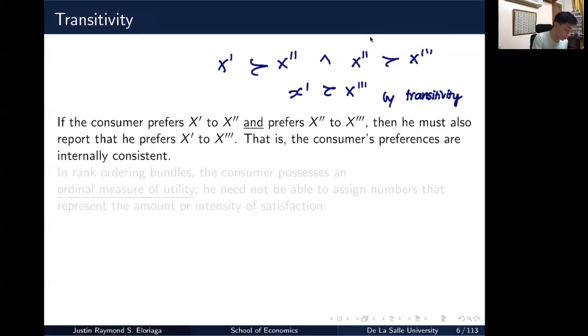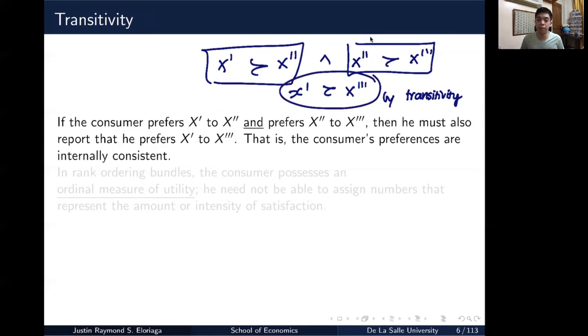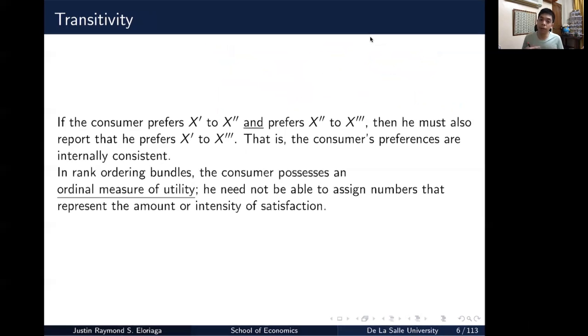In essence, the consumer's preferences are internally consistent. So when I ask you to choose between one and two, and you say one, and then I ask you separately to compare two and three, and you choose two, then obviously I could already infer because your preferences should be internally consistent, that one should be preferred to three. And that should just follow reasonably from that assertion. So in rank ordering bundles, when you rank which one you prefer, most prefer, which one you least prefer, the consumer possesses an ordinal measure of utility.